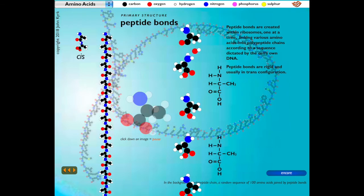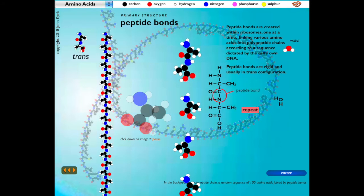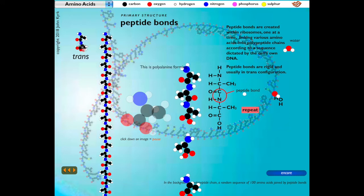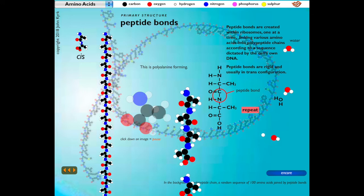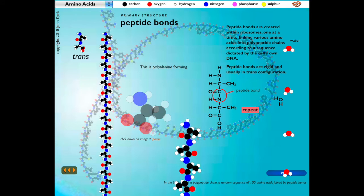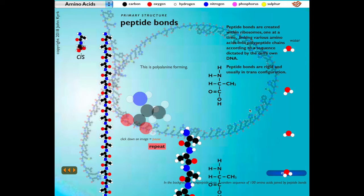Amino acids form chains through dehydration synthesis, a process similar to the one we see in the formation of carbohydrate polymers. One amino acid loses a hydrogen ion from its amine group, the other loses a hydroxyl ion from its carboxyl group, and the two form a peptide bond between the now available carbon and nitrogen atoms. The released hydroxyl and hydrogen ions form a water molecule.